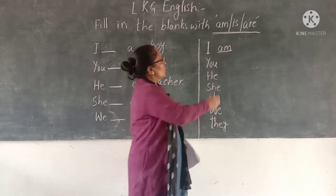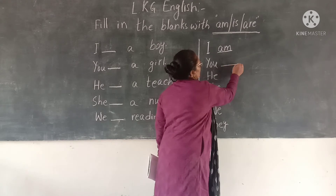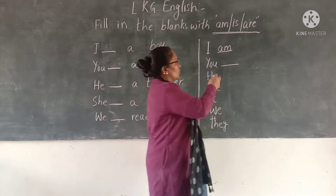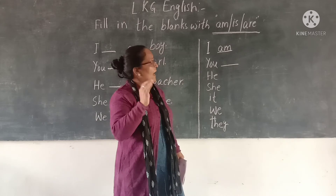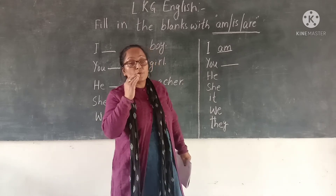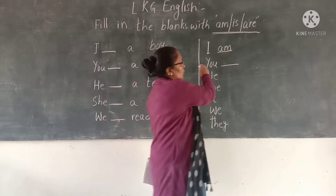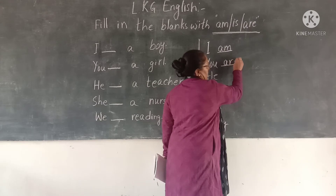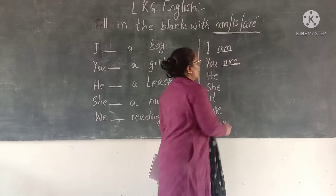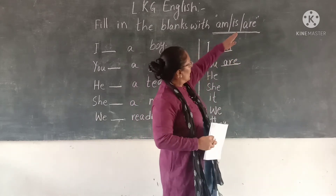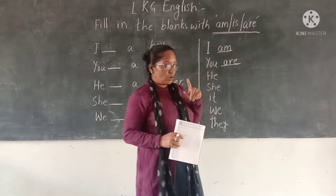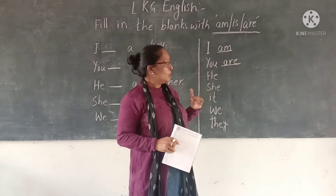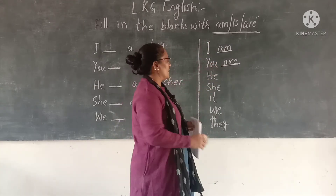You. After you, we use ARE. You will not write 'I is' or 'you am' or 'you is' — those are wrong. You ARE. Always you are.